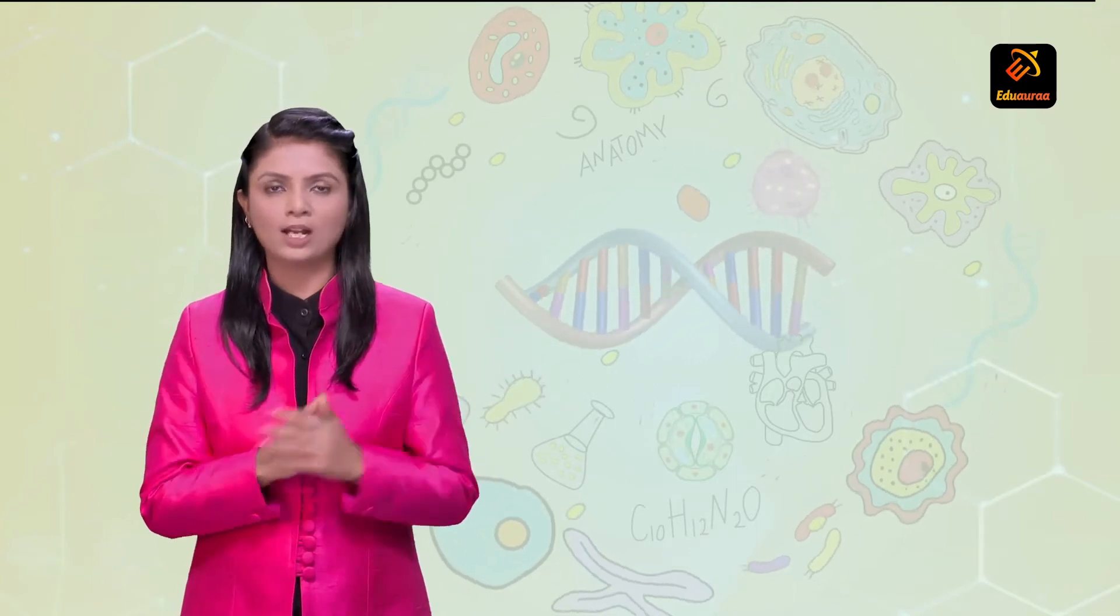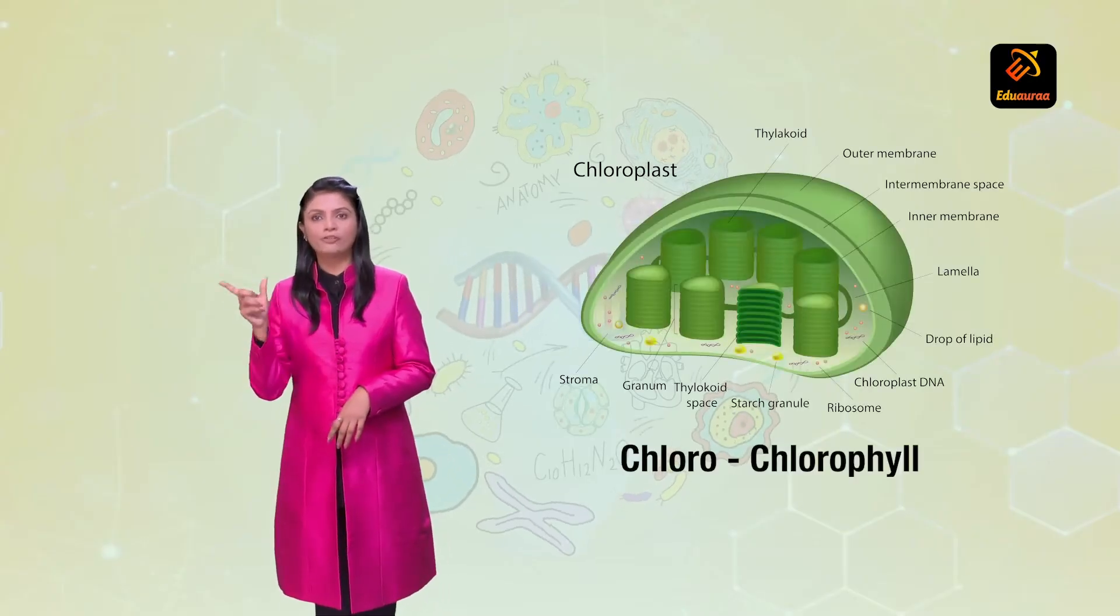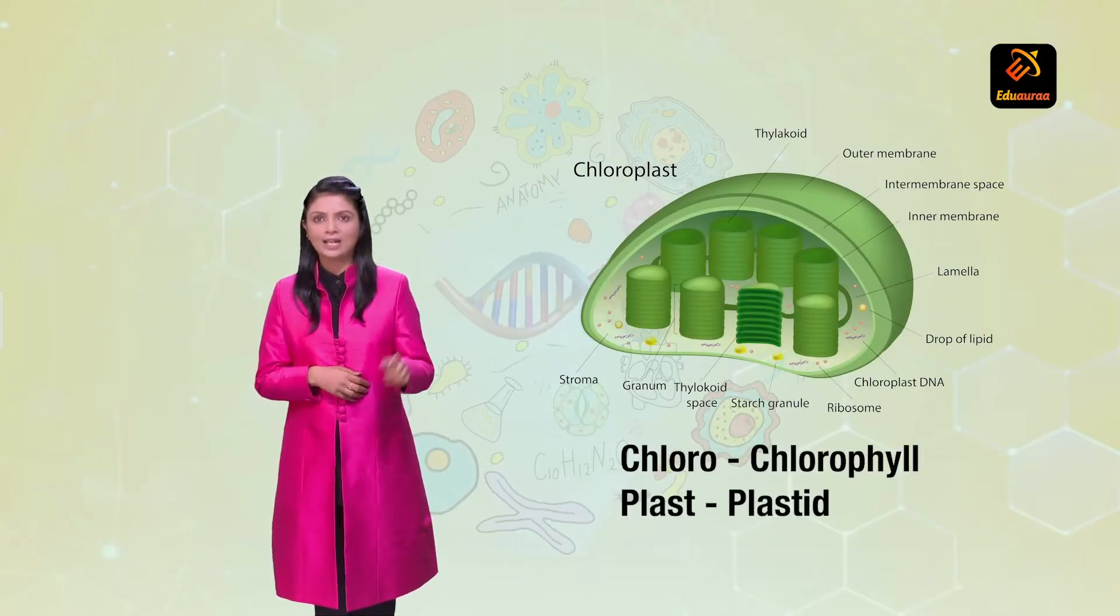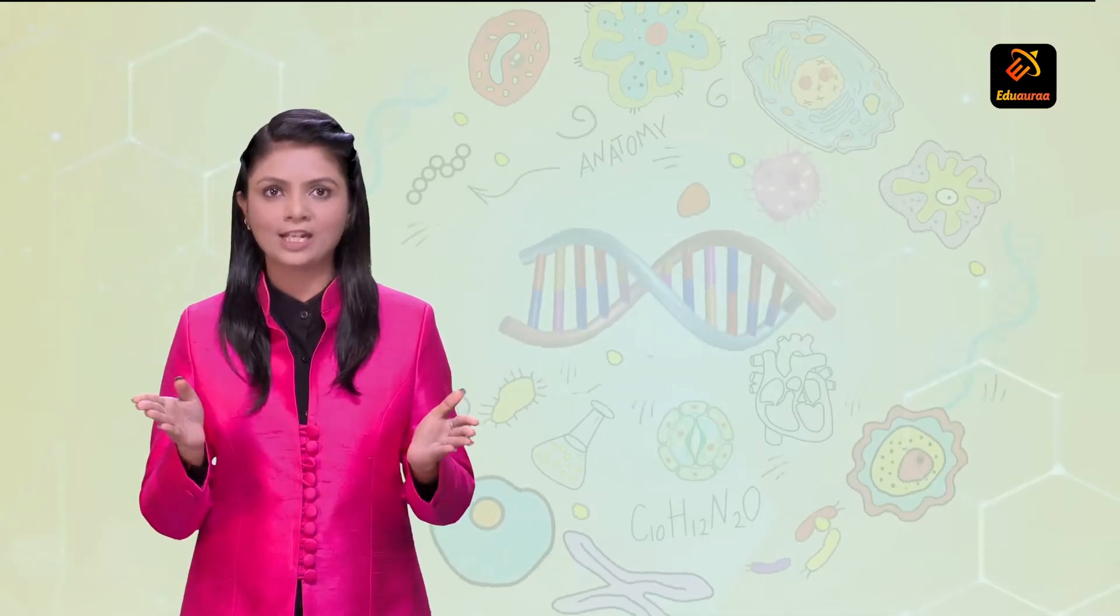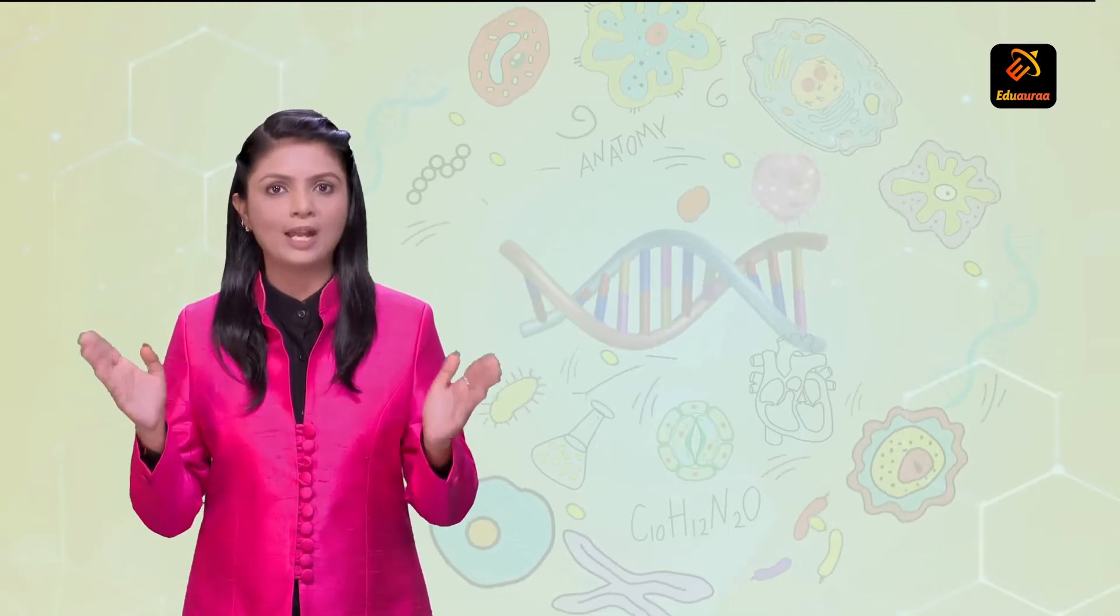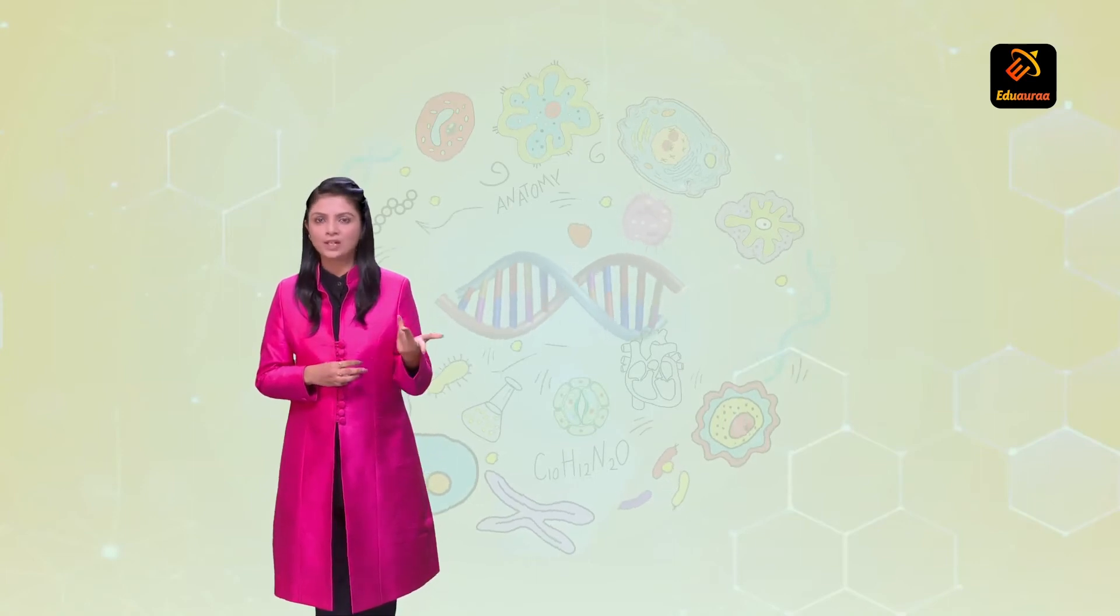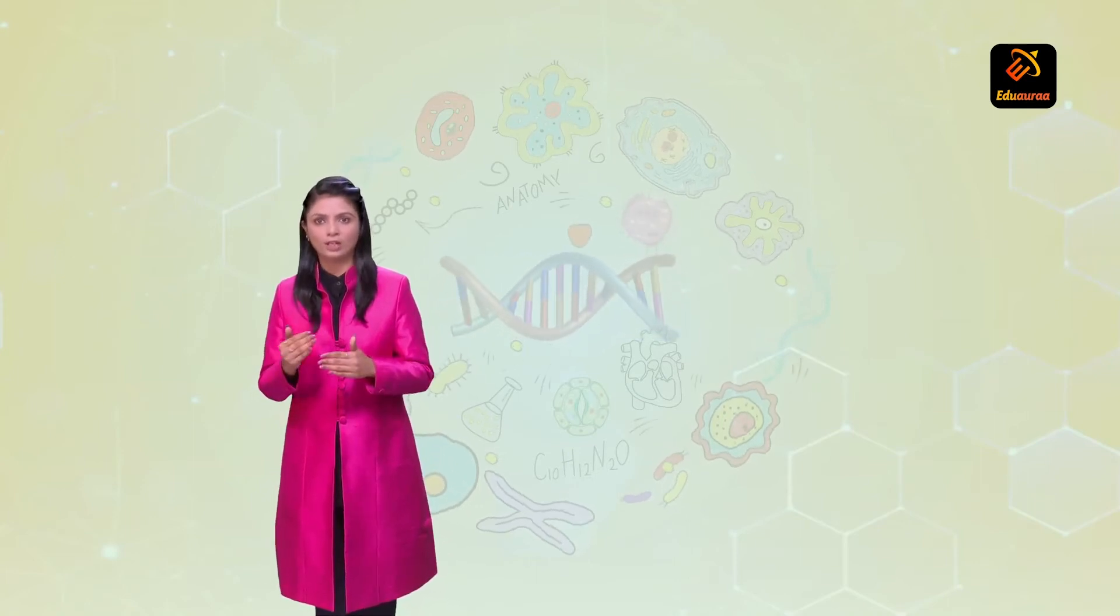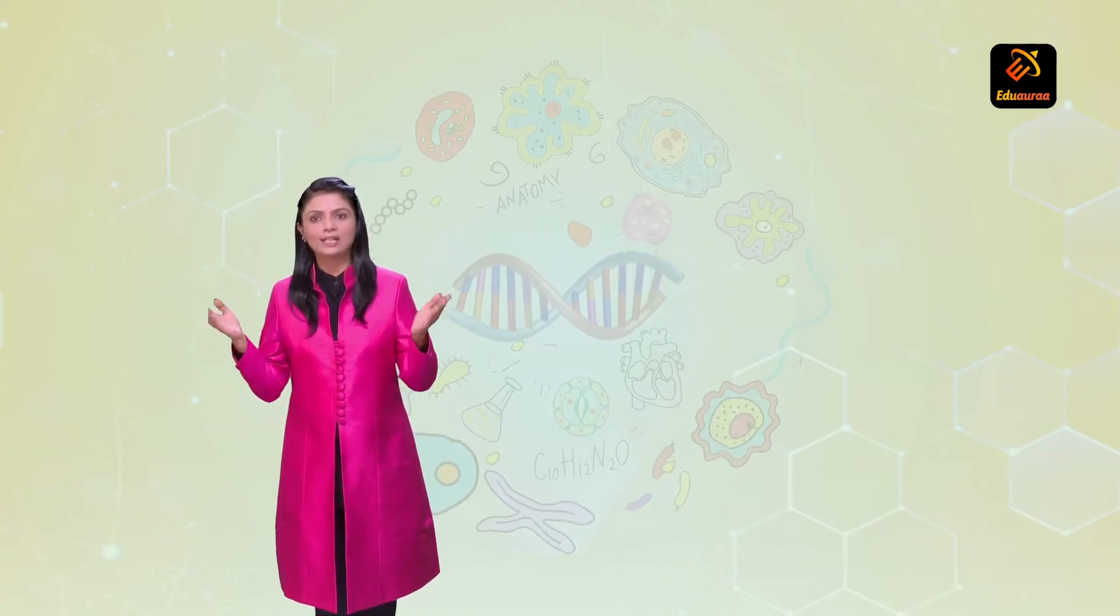The first one chloroplast. The word chloro means chlorophyll and plast is plastid. So chloroplast is a plastid which has green pigment present in it. What is the role of this chloroplast? It converts light energy into food by the process which you know is called photosynthesis.